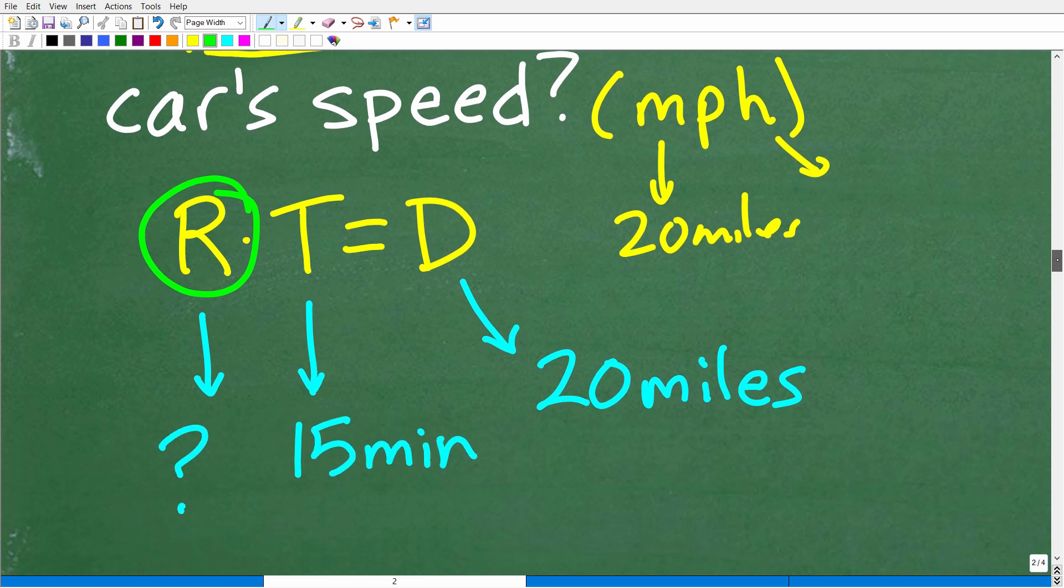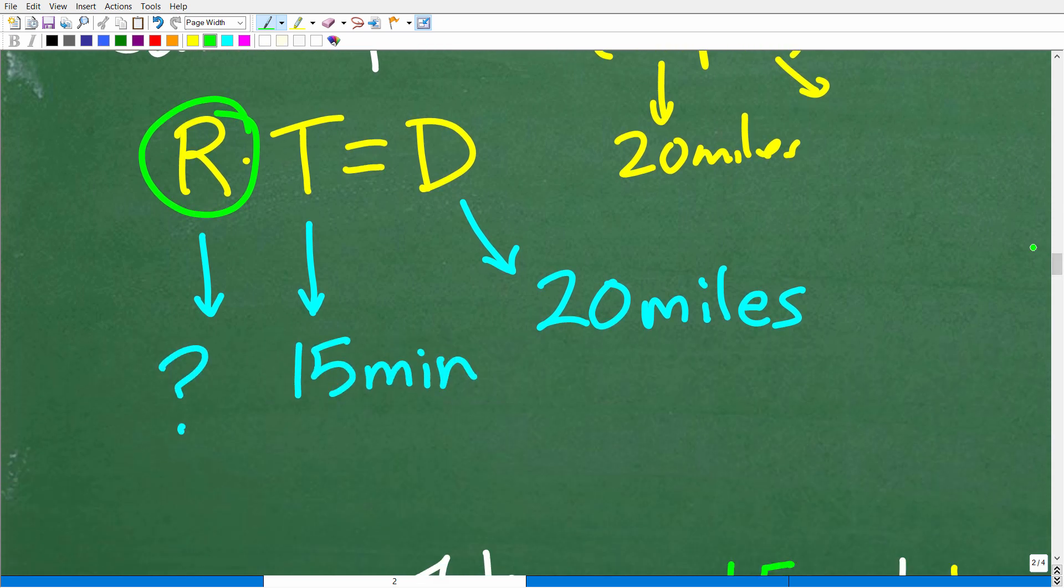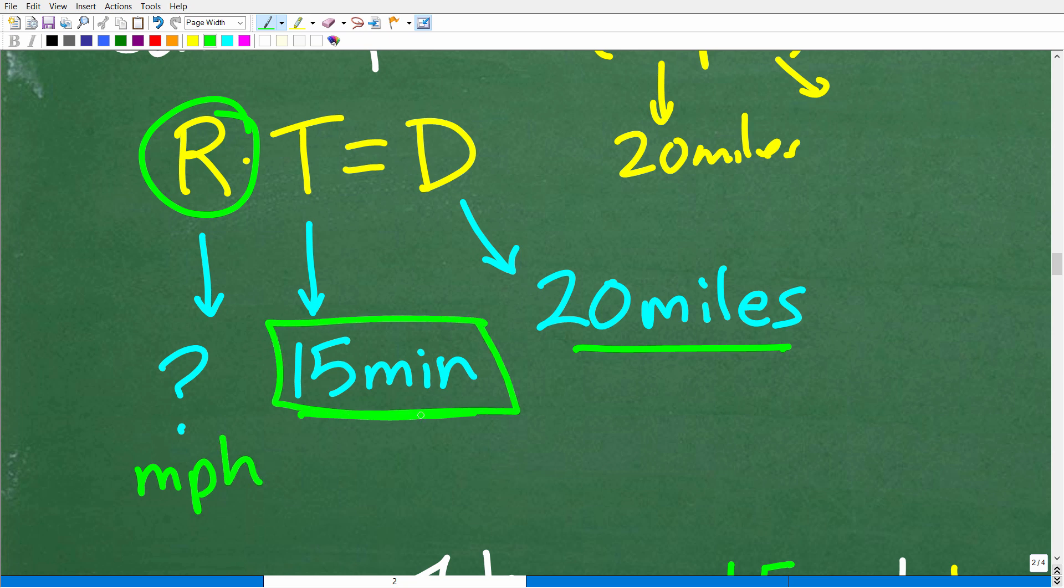So I'm thinking about rate times time is equal to distance. What am I looking for? I'm looking for how fast the vehicle's going, right? What is the car's speed? So the unknown value in this equation is the rate. I don't know that, but I do know the time is 15 minutes. And I also know the distance that's 20 miles and I want my speed in miles per hour. So right here, I have my time in minutes. I'm going to have to convert minutes to hours.